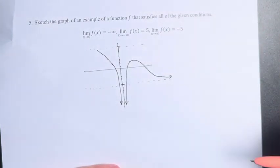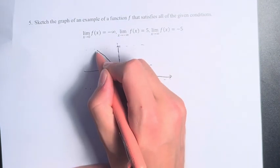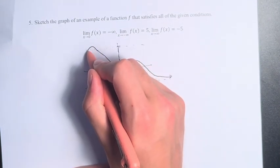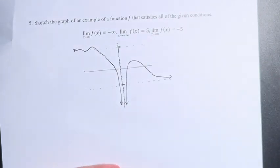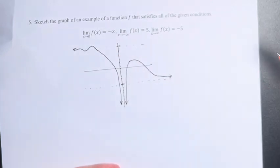And just for the sake of demonstration, we can actually cross an asymptote as long as we're getting closer and closer to it as time goes on. And this is just an example of a function f which satisfies these given conditions.